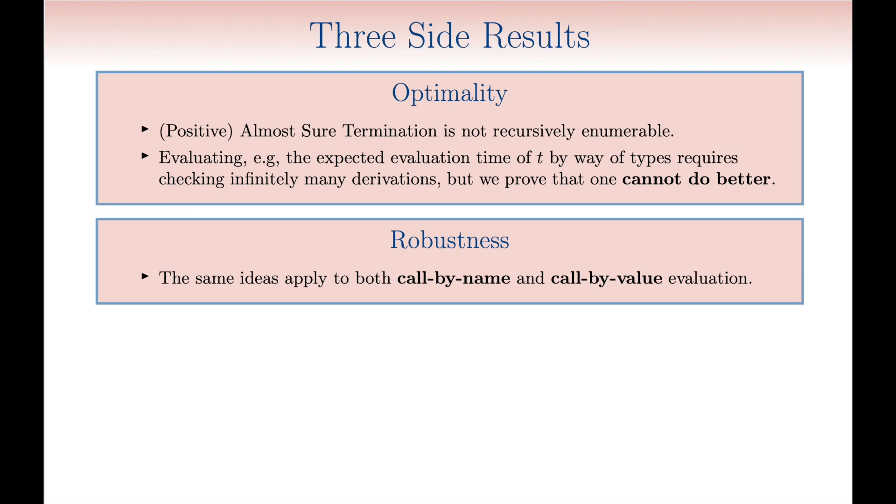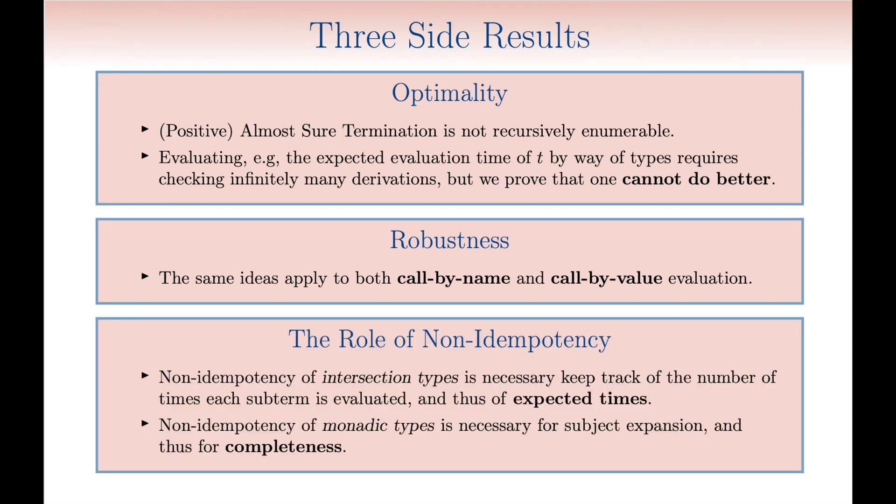We also prove our type discipline to be robust by successfully instantiating it on call-by-value and call-by-name evaluation. Finally, we manage to prove that non-idempotency is necessary to get a perfect match between the static and dynamic semantics, and that this must hold both for intersection types and for monadic types.